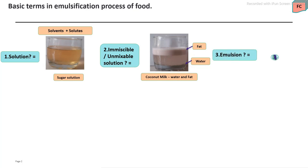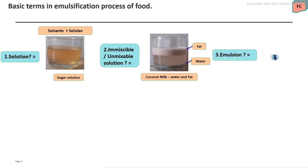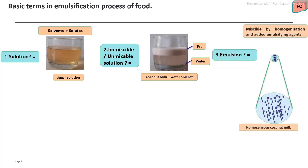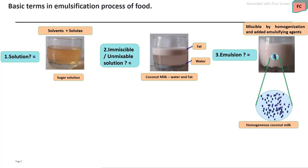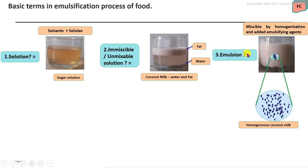What is meant by emulsion? Emulsion is a process in which whatever immiscible constituents are mixed to form a uniform or homogeneous product. This is called the emulsion process.